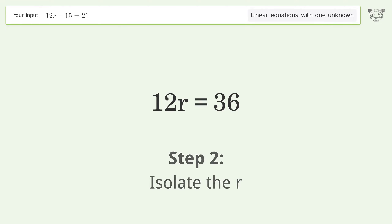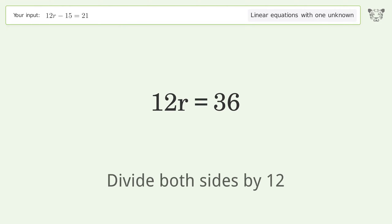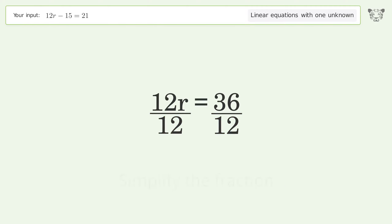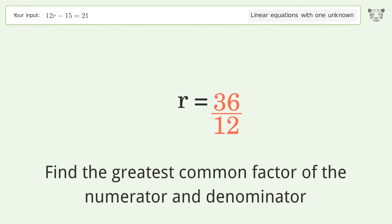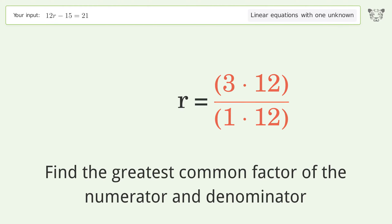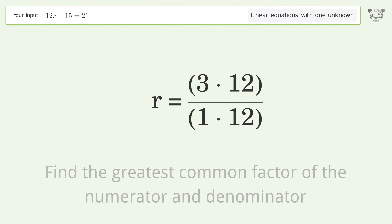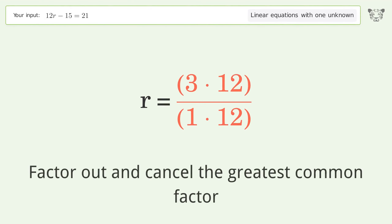Isolate the r: divide both sides by 12 and simplify the fraction. Find the greatest common factor of the numerator and denominator, then factor out and cancel the greatest common factor.